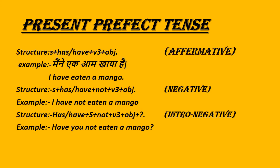For example: 'I have eaten a mango.' The affirmative structure is: Subject + has/have + V3 + Object. Translated example: I have eaten a mango.